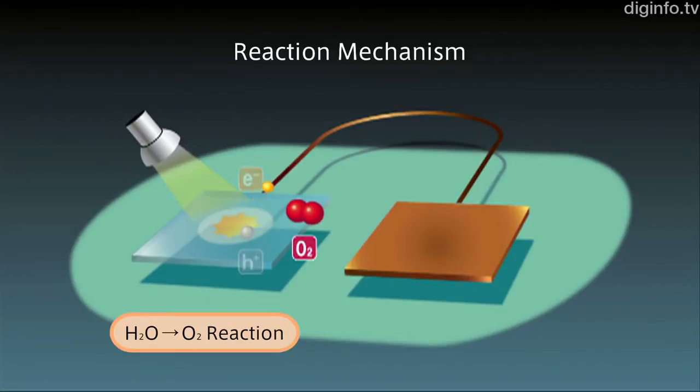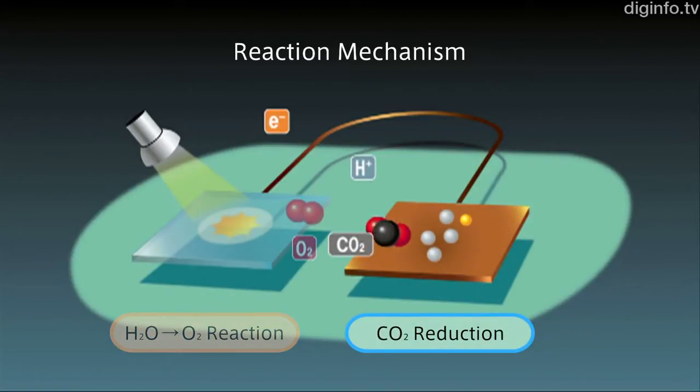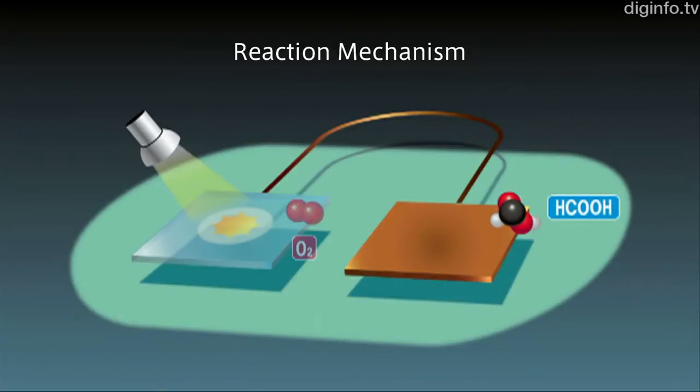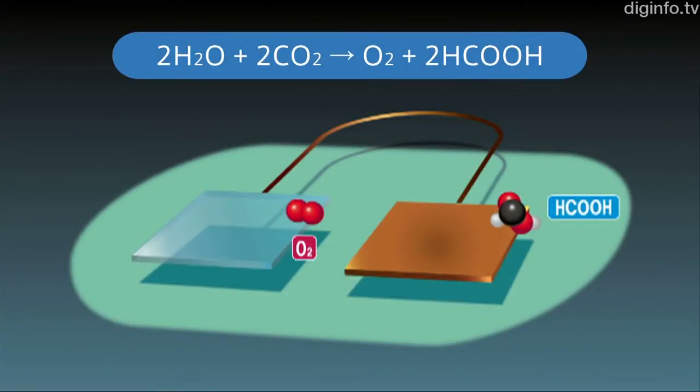The electrons move through wires to a catalyst electrode, where they react with carbon dioxide and hydrogen ions. This reduction reaction produces organic substances, mainly formic acid.